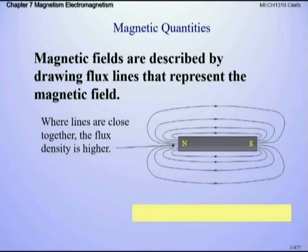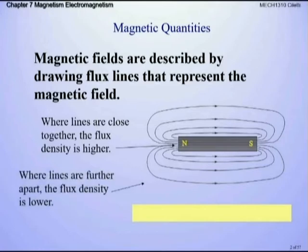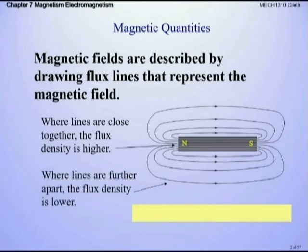As the flux lines go outward and loop around from north to south, they become weaker. That's why magnets are much stronger when you bring them close together than when they're far apart. Where flux lines are closer together, we have a stronger magnetic field; where they're farther apart, our magnetic field is not as strong.